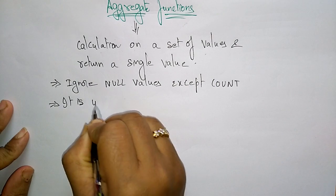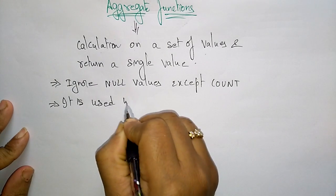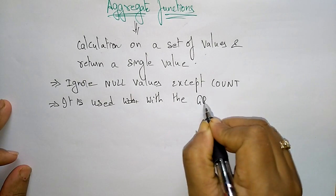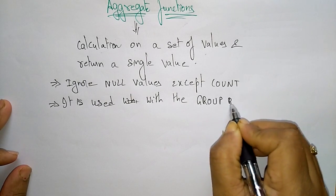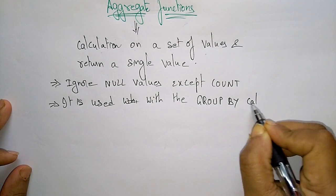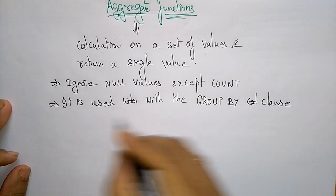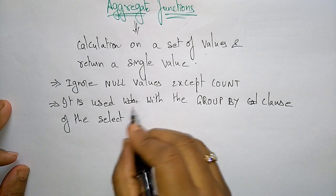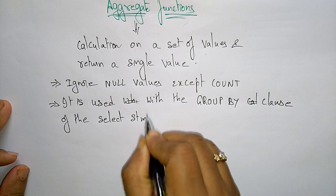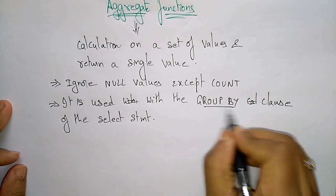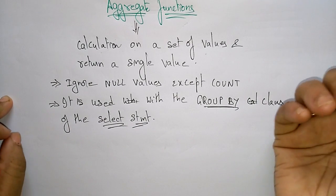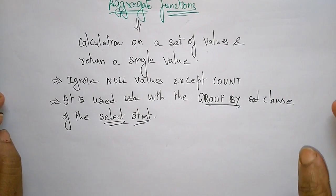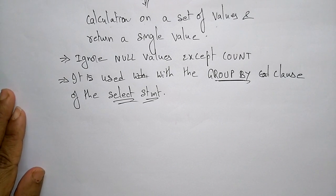Aggregate functions are used with the GROUP BY clause of the SELECT statement. If you want to access an aggregate function, you can use the GROUP BY clause in the SELECT statement — write the function name and you can write the query using the GROUP BY clause.